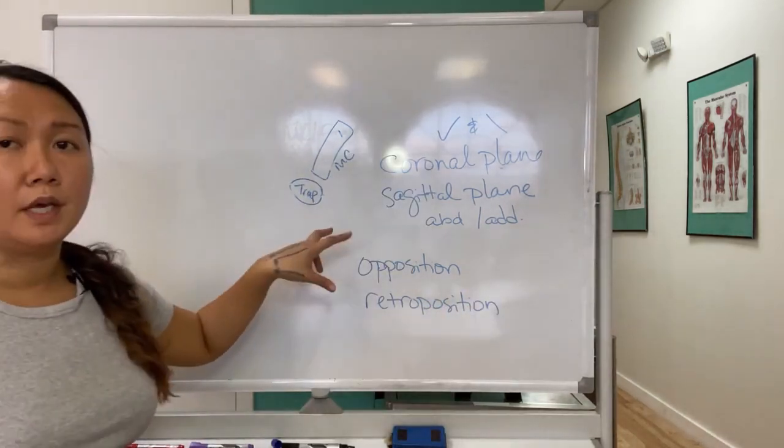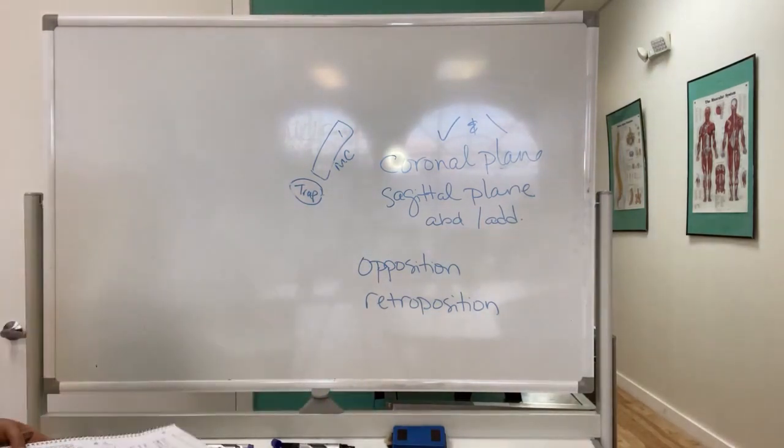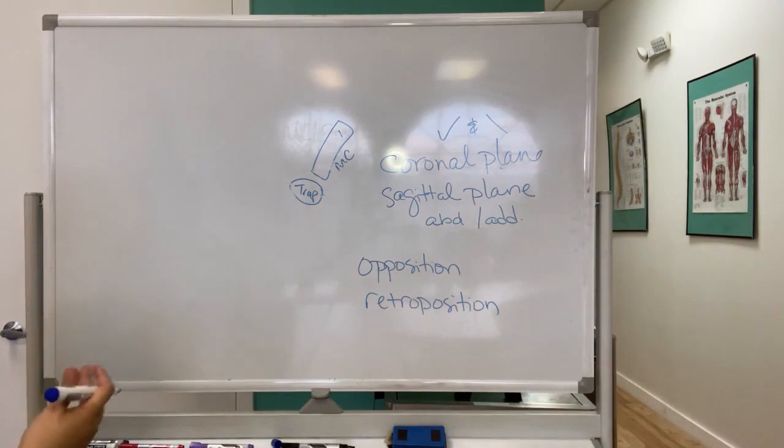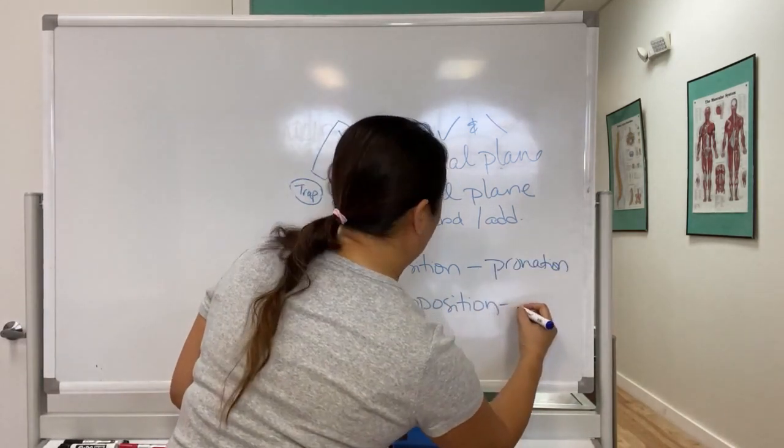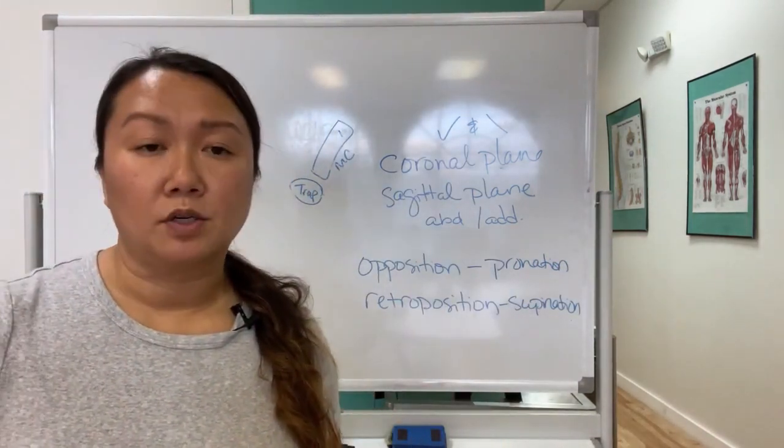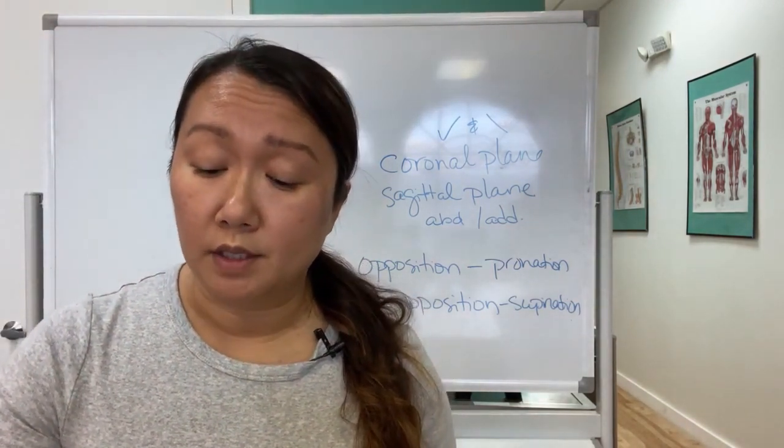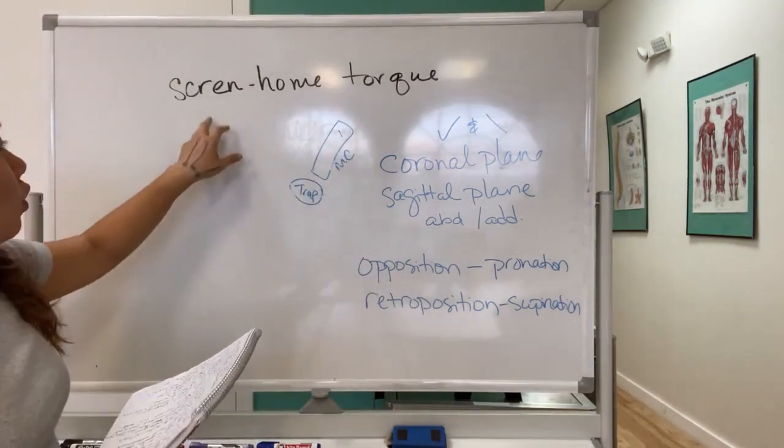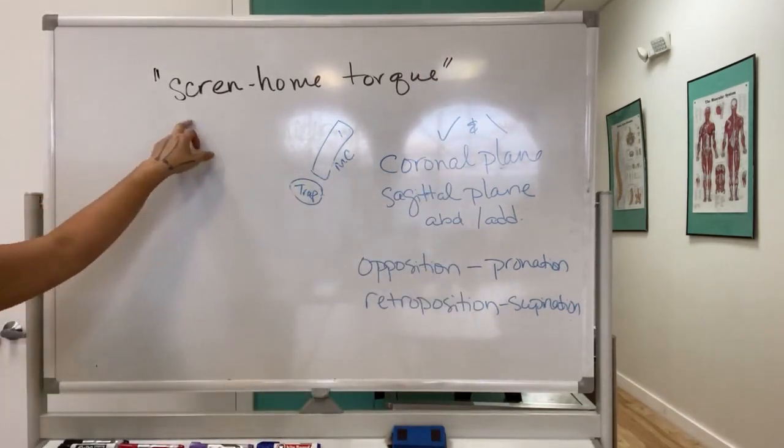It's important to know key terminology and words because if they ask you in a certain way, you have to understand what those words mean. So opposition also means pronation and retroposition means supination. There was something that I read in this chapter that I didn't see in the sixth edition, which is they use the word - screen home torque was a new terminology. I had never heard of it. I don't know if you guys have heard of it.